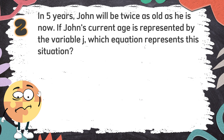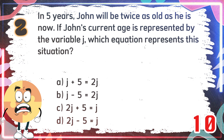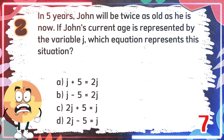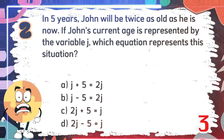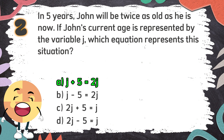Number 2: In 5 years, John will be twice as old as he is now. If John's current age is represented by the variable J, which equation represents this situation? The choices are: A. J plus 5 equals 2J, B. J minus 5 equals 2J, C. 2J plus 5 equals J, D. 2J minus 5 equals J. The correct answer is A. J plus 5 equals 2J.